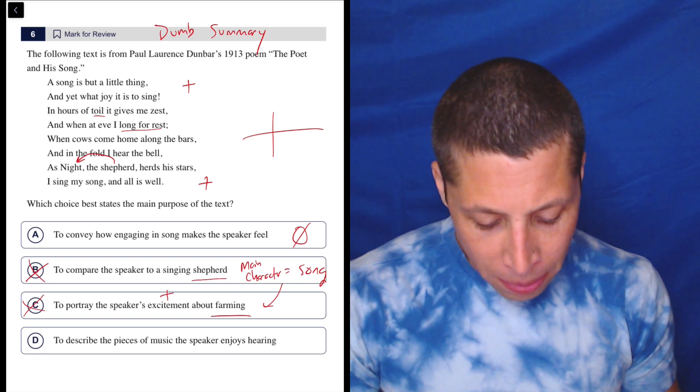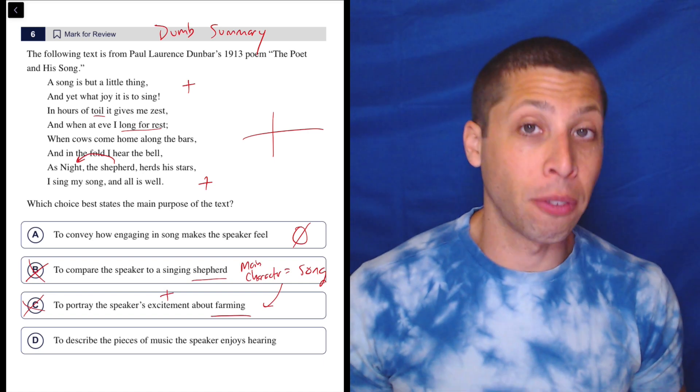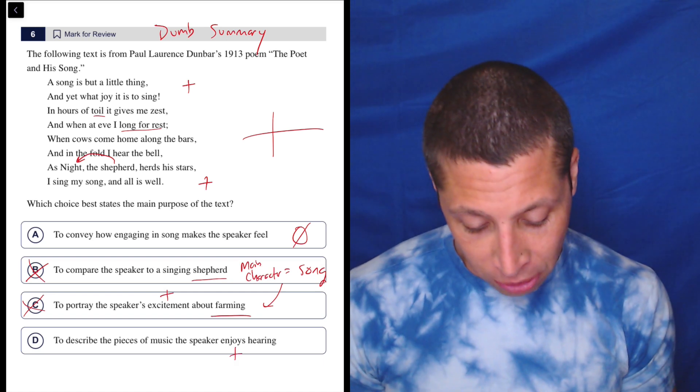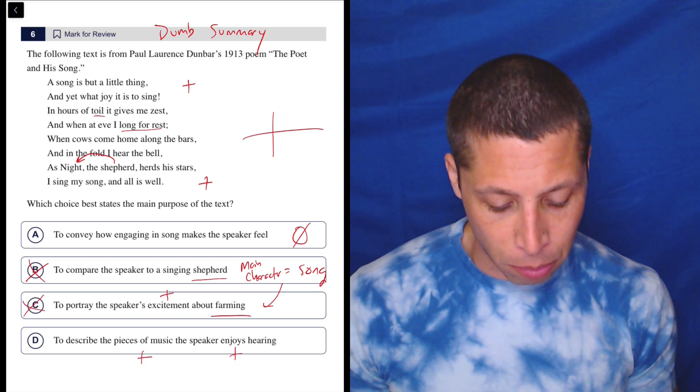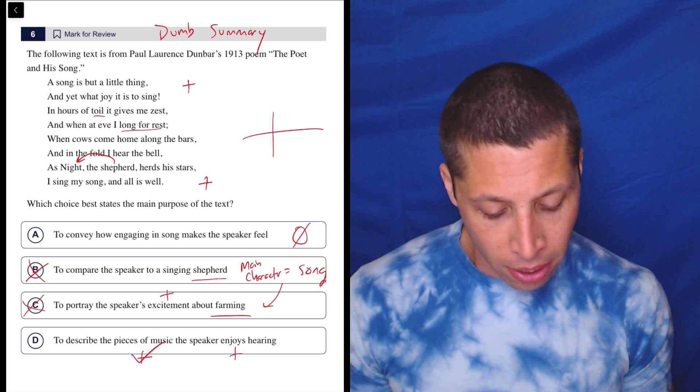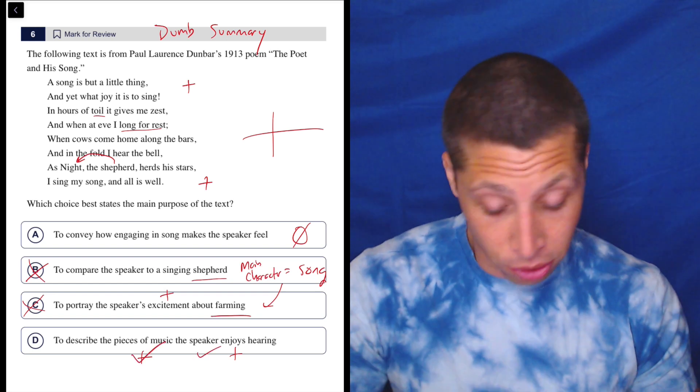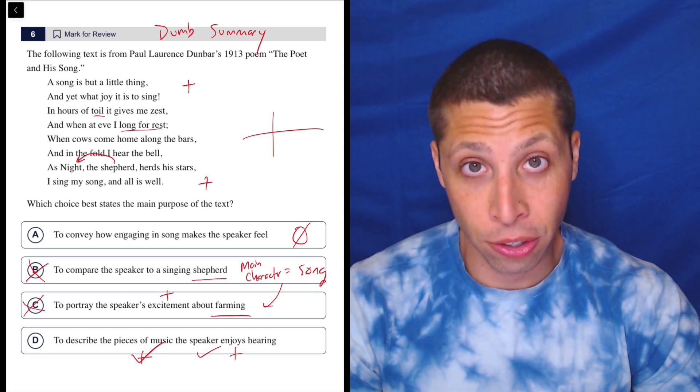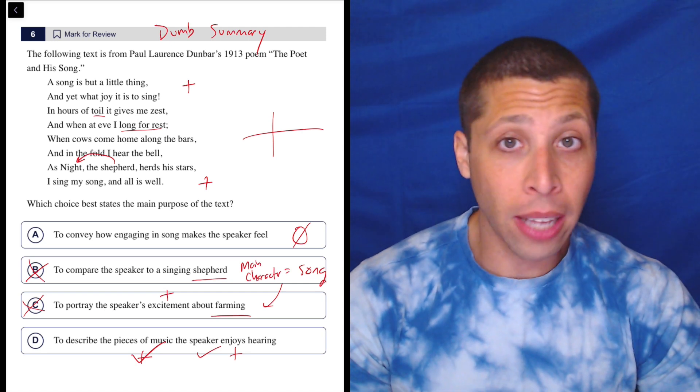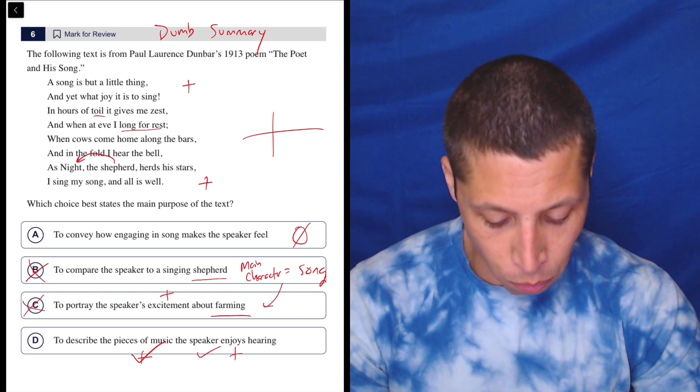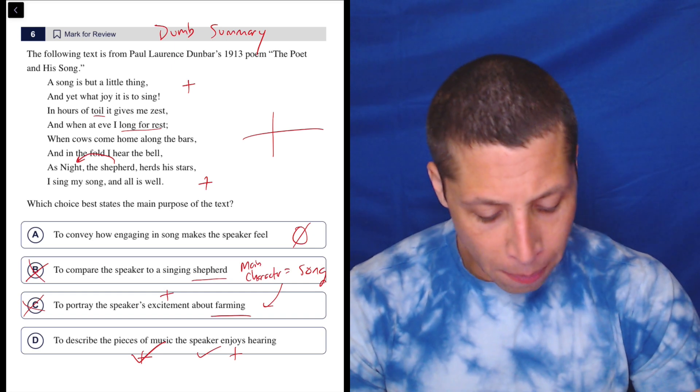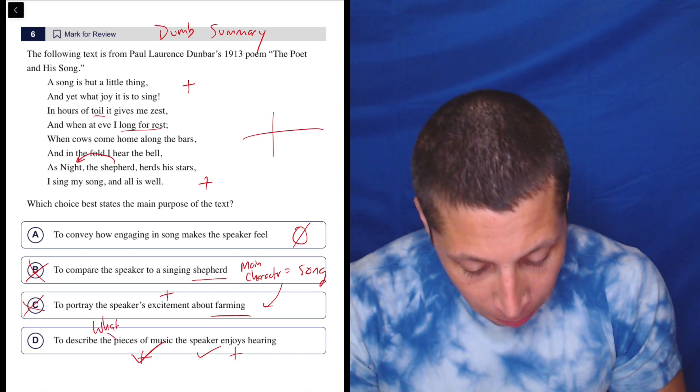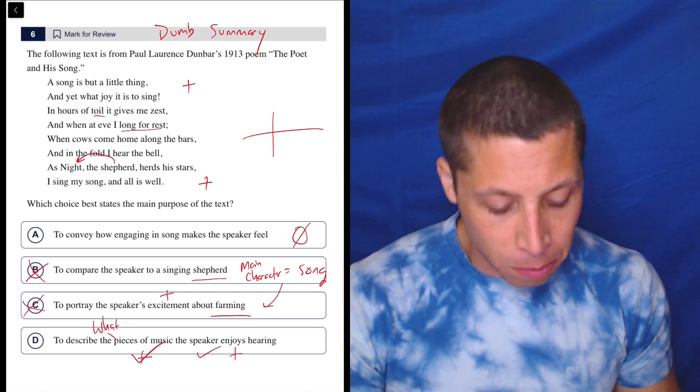D, to describe the pieces of music the speaker enjoys hearing. This is a great example of a choice that seems really good because we have the right connotation, right? Enjoy. It sounds like it's about songs. So pieces of music, that seems pretty good, right? Or at least let's check that off. The speaker is enjoying music, I guess. So this all sounds really good, but we can turn this answer choice into a question. And when we do, we realize that this poem is not answering that question, right? So what would the question be? To describe the pieces of music the speaker enjoys hearing? Okay.